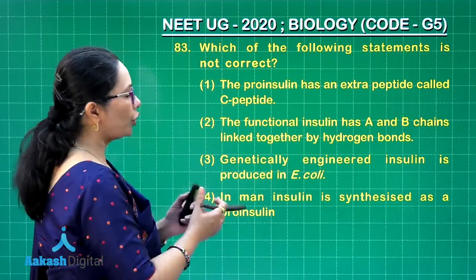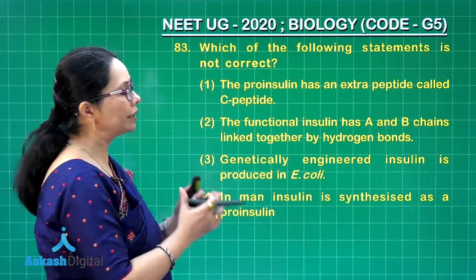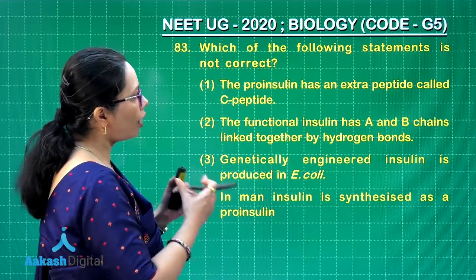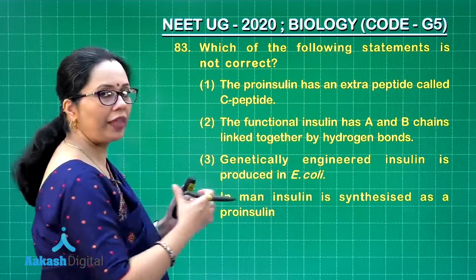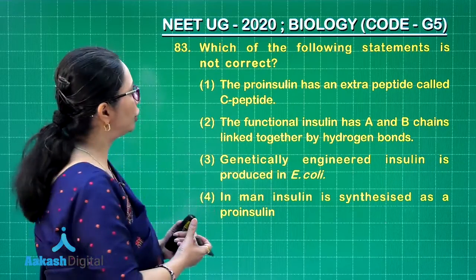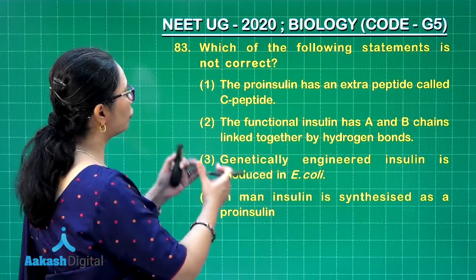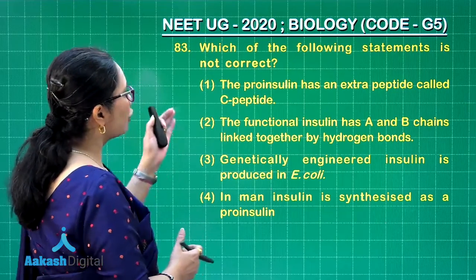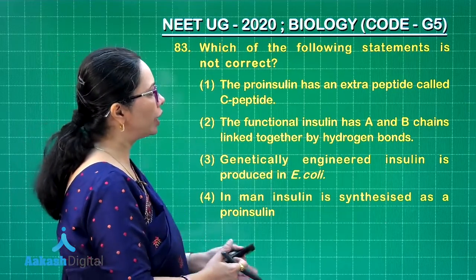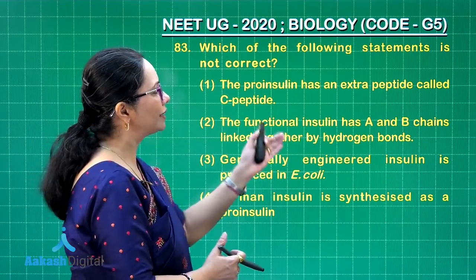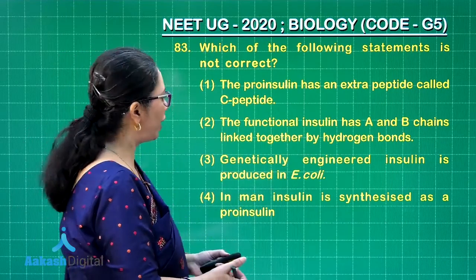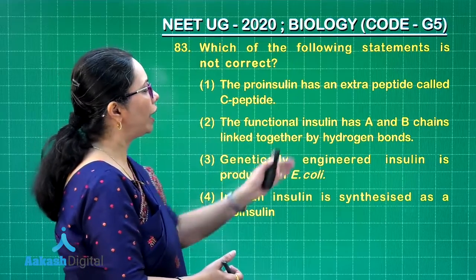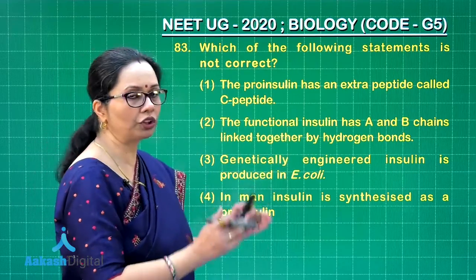Pro-insulin is the inactive form of insulin which is formed first and then it is converted into insulin by removal of the C-peptide. The functional insulin has A and B chains linked together by hydrogen bonds.